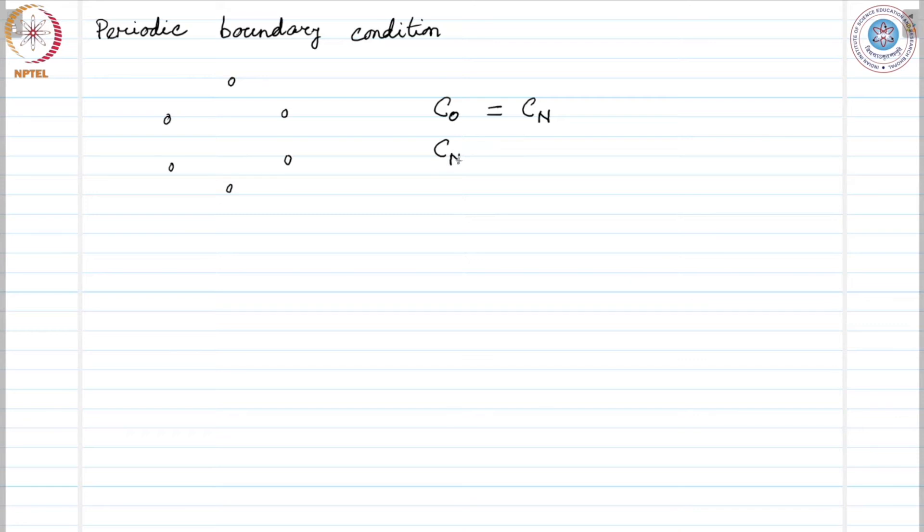With this, the general solution becomes e^(inθ) equals 1, which means θ equals 2mπ/n, where m can take the value from 0 to n minus 1.